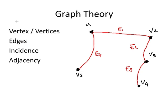First off we have a vertex, or as we pluralize it, vertices. A vertex is a location, or in other words, a stationary point on a graph. So in this particular example, v1, v2, v3, v4, and v5 are vertices.